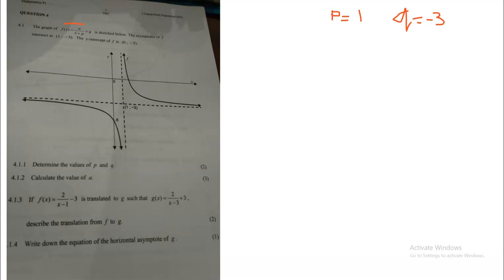Now for the second part: whether it's a parabola or an exponential graph, whenever they ask you to find the value of a, you must use another point on the graph which is not the asymptote. Looking at the graph, the other point we have here is (0, negative 5). We know the coordinate because this is the y-intercept — the graph is cutting the y-axis. We will use this coordinate because it's not the asymptote. As long as the coordinate is not an asymptote, you can use it.